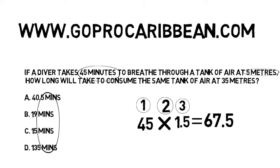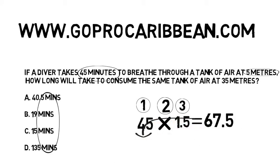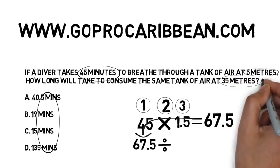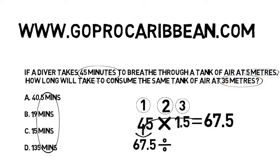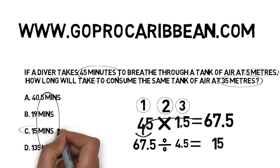That is how long that tank would last us at the surface, given the information provided in the question. We move that down and use it as the first number in step one of round two. Now we think: if the tank lasts me 67.5 minutes at the surface, how long would it last me at the second depth? It's going to last me less time, so I divide. What's the second depth? 35 meters. What's the pressure at 35 meters? 4.5 atmospheres. 67.5 divided by 4.5 is 15. It's answer C.